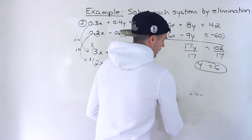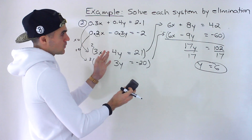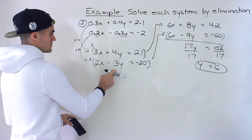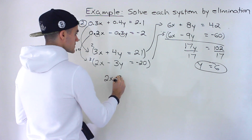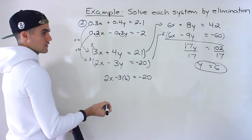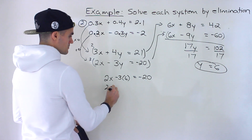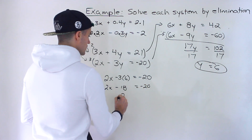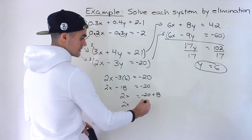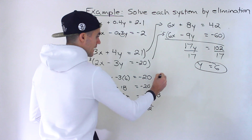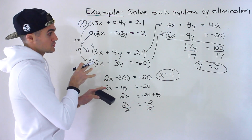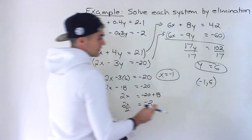With a y value of 6, we can plug into any of the equations. I'll use the second integer equation: 2x minus 3 times 6 equals negative 20, so 2x minus 18 equals negative 20. Bringing negative 18 over: 2x equals negative 20 plus 18, which is negative 2. Dividing both sides by 2 gives us x equals negative 1. So the point of intersection between these lines is negative 1 and 6.